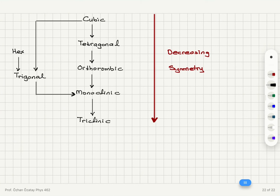So what is the hierarchy of symmetries? The most symmetric one is the cubic structure. We distort the cube to obtain a tetragonal, then distort the tetragonal to obtain orthorhombic, then monoclinic, and then triclinic. Triclinic has the least amount of symmetry.